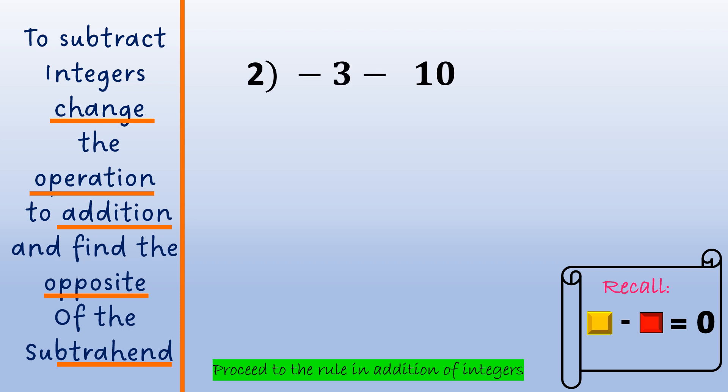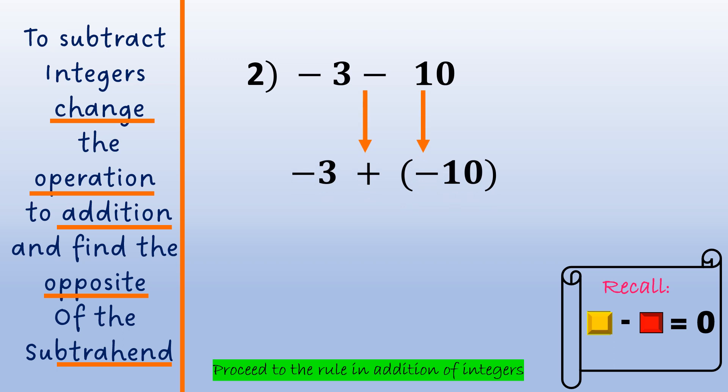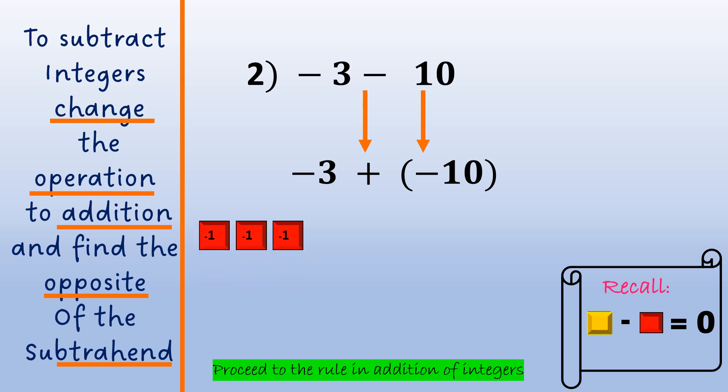Example number 2: negative 3 minus positive 10. We're going to use the same rule as in example number 1. The minuend stays the same, negative 3. The operation becomes addition, and the subtrahend is positive 10 and its opposite is negative 10. Using algebra tiles to represent this.